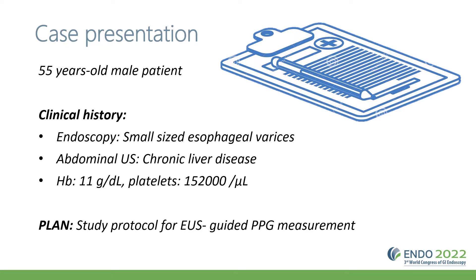This case is about a 50-year-old male patient with a past medical history of chronic liver disease on abdominal ultrasound. In endoscopy, this patient showed small-sized esophageal varices. Laboratory findings showed mild anemia and a platelet count at the lower limit of the normal value. The plan for this patient was a study protocol for EUS-guided PPG measurement.